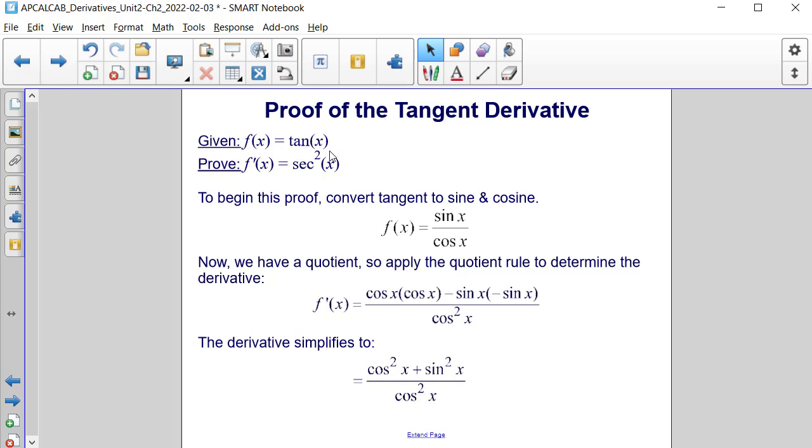We are given that f of x is equal to tangent of x, and we need to prove that f prime of x is equal to secant of x squared, or secant squared of x.